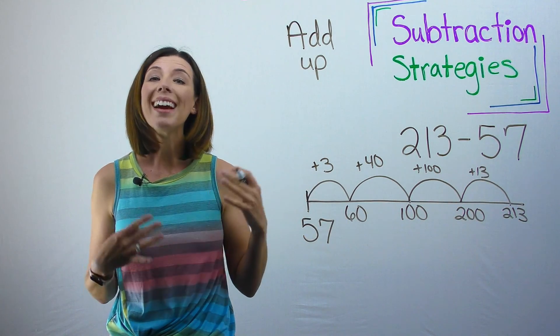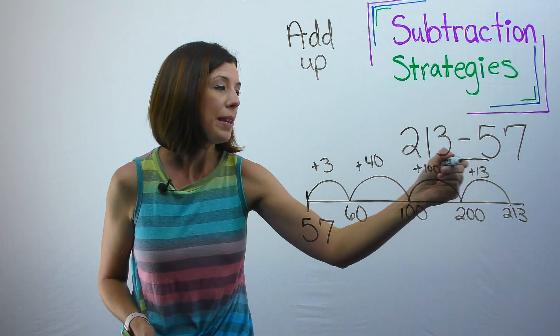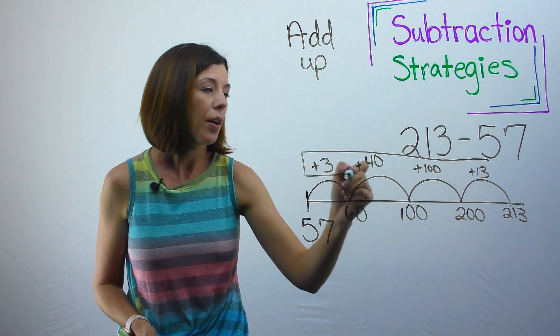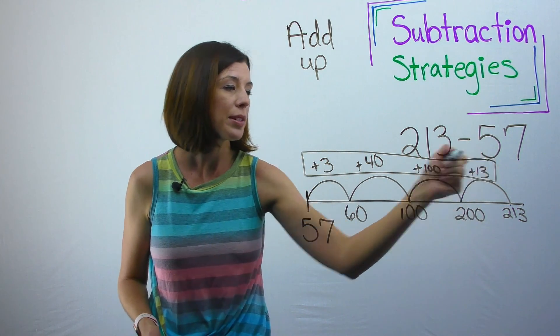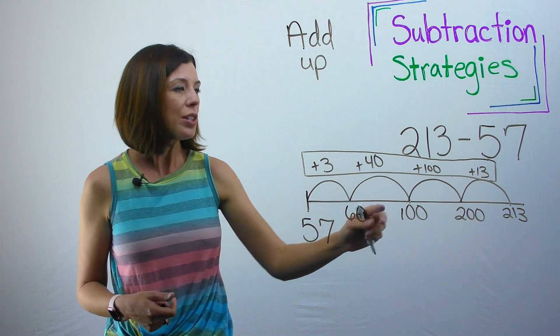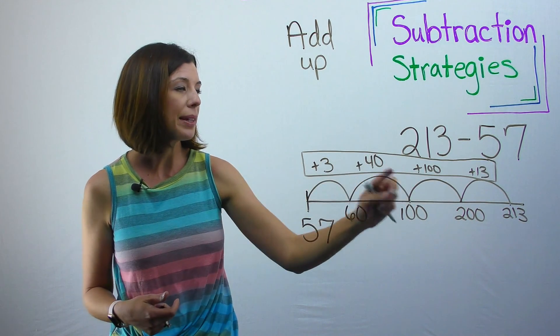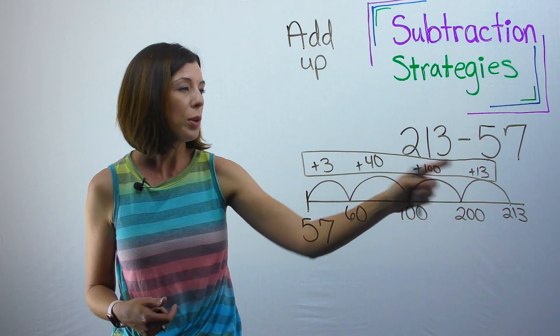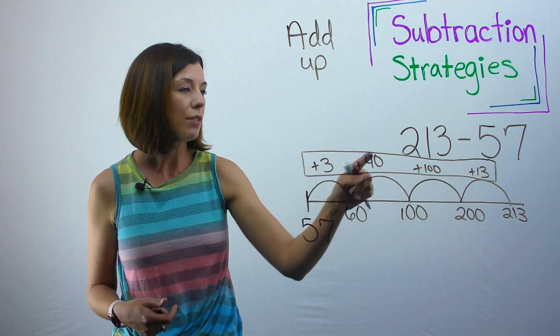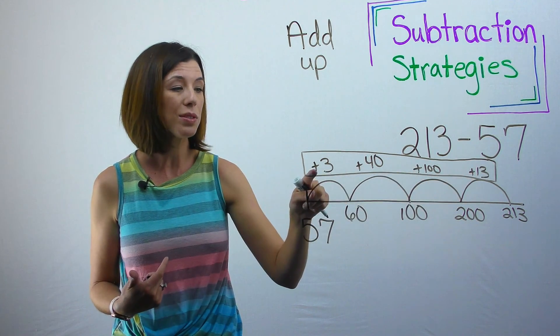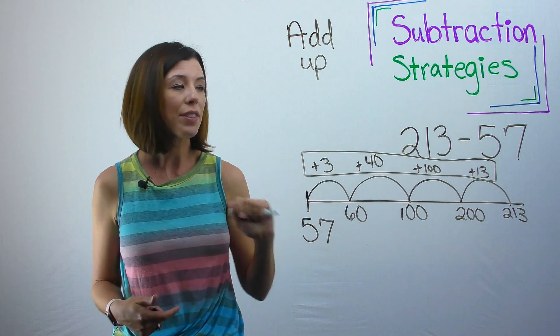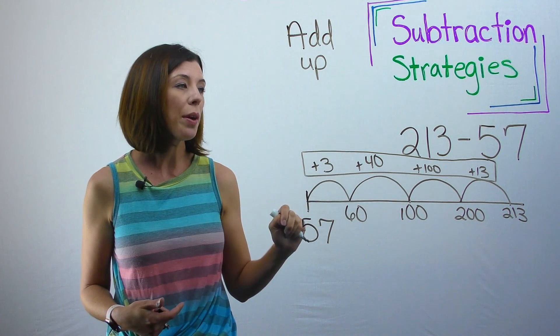Now, to figure out what our answer is, we are going to be adding up all of these numbers up here, all of these hops that I made. So you can see if I start combining by place value, I've got 40 plus 13 plus 3. 40 plus 13 would be 53 plus 3 is 56, plus I've got another 100. So I know that my answer to this problem would be 156.